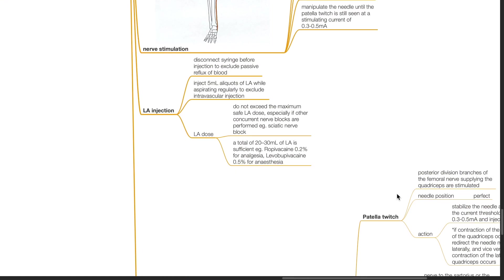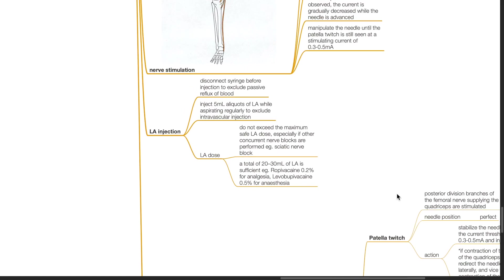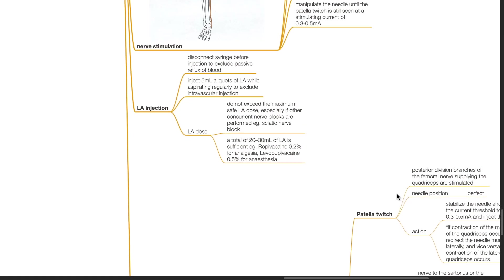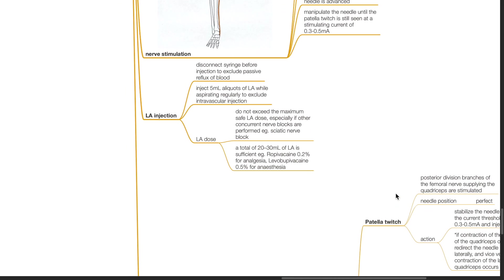LA injection. Disconnect the syringe before injection to exclude passive reflux of blood. Inject 5 mL aliquots of LA while aspirating regularly to exclude intravascular injection. Do not exceed the maximum safe LA dose, especially if other concurrent nerve blocks are performed, for example sciatic nerve block. A total of 20 to 30 mL of LA is sufficient; some books recommend 15 to 20 mL only. Choice of LA has been discussed in the previous section.